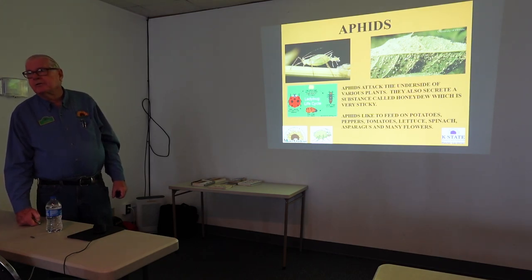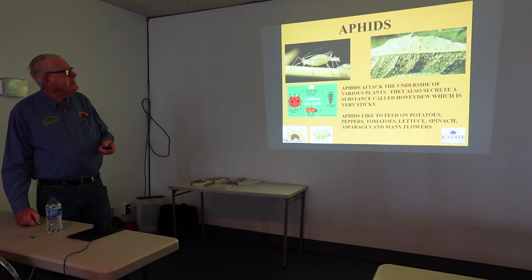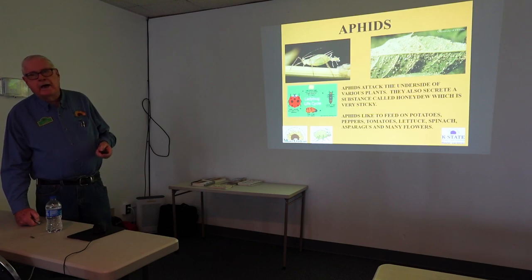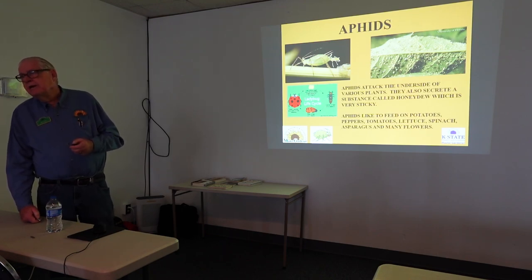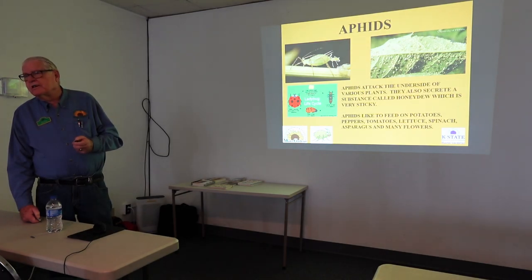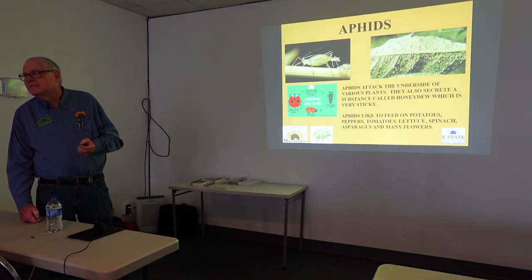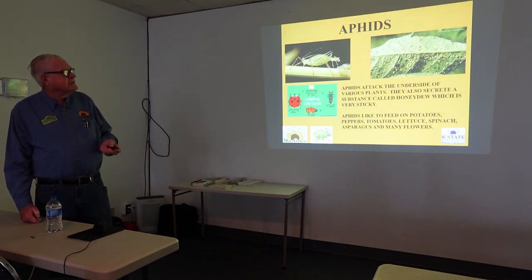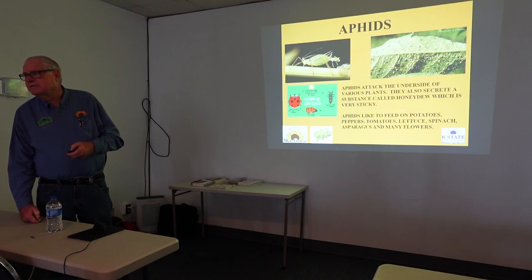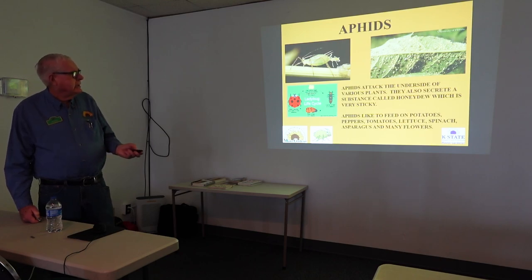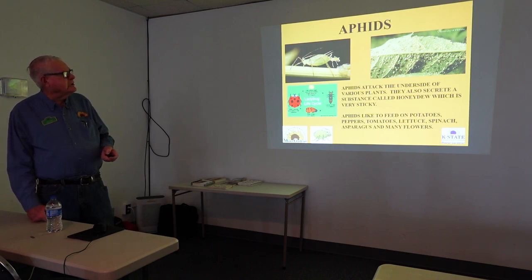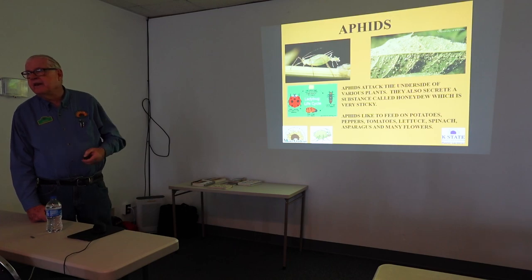Aphids — another scourge. Aphids attack the underside of various plants and secrete a substance called honeydew. If you've ever had your car parked under a tree with aphids, it's almost impossible to get that sticky honeydew off your windshield. Aphids like to feed on potatoes, peppers, tomatoes, lettuce, spinach, asparagus, and many flowers — so they have a wide range of host plants.